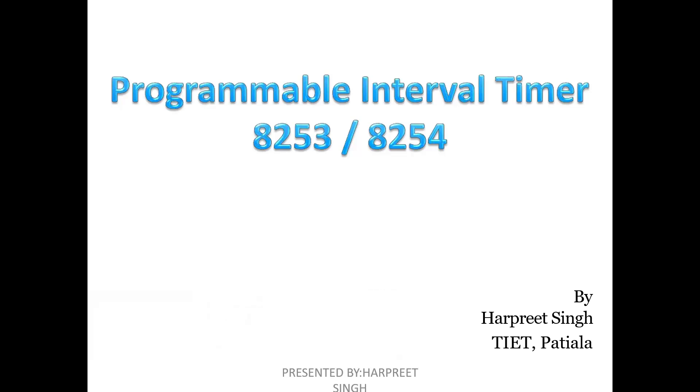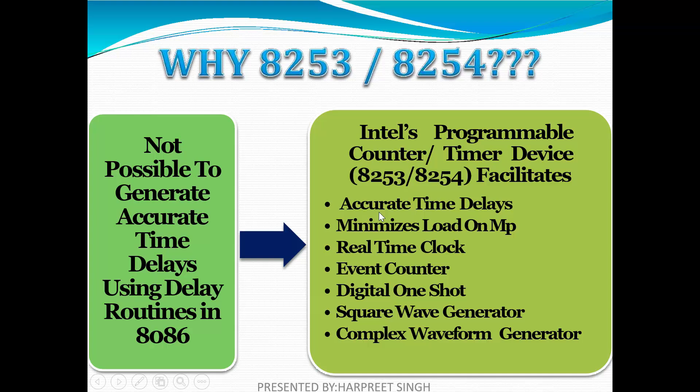It is dedicated to generate accurate time delays. In 8085 and 8086, time delays are generated with the help of a counter designed by loading an appropriate number into a register and using increment and decrement instructions. A loop is established to update the count and each count is checked to determine whether it has reached the final number or not. If not, then the loop is repeated. So it's not possible to generate accurate time delays using delay routines in 8086.